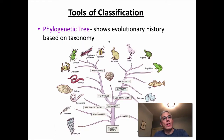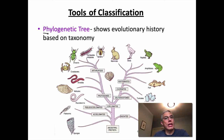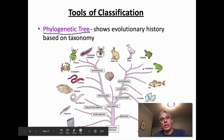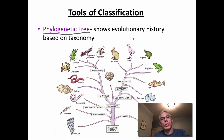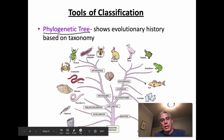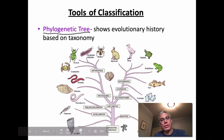One thing we need to introduce for this video is how to visually represent the classification scheme when comparing different living organisms. Something you might come across is a phylogenetic tree, which is a tool we can use to show the evolutionary history based on the taxonomy or classification we've come up with. It simply looks like a big tree, and at the base of that tree — which is really important to understand — is that ancient common ancestor, in this case the ancestral protist or single-celled organism that gave rise to everything in the tree.